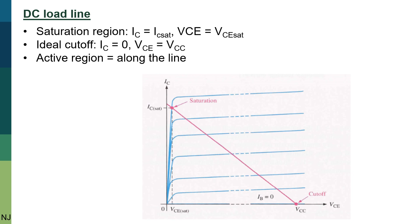Next, the DC load line can be used to show the cutoff and saturation in the collector characteristic curve. This is the DC load line. The top of the load line is at saturation where IC equals IC saturation and VCE equals VCE saturation.